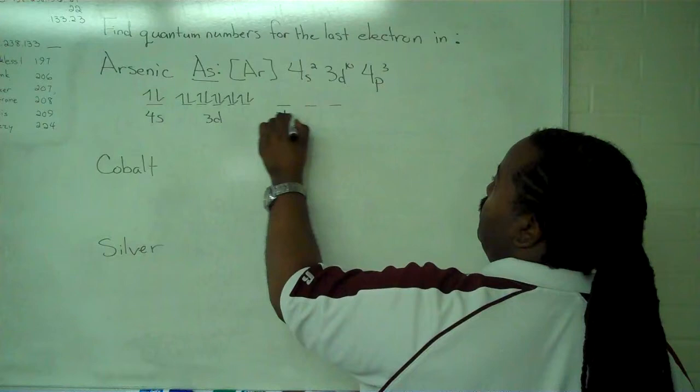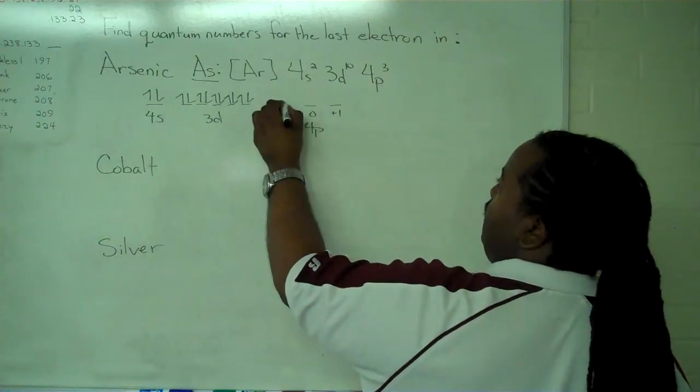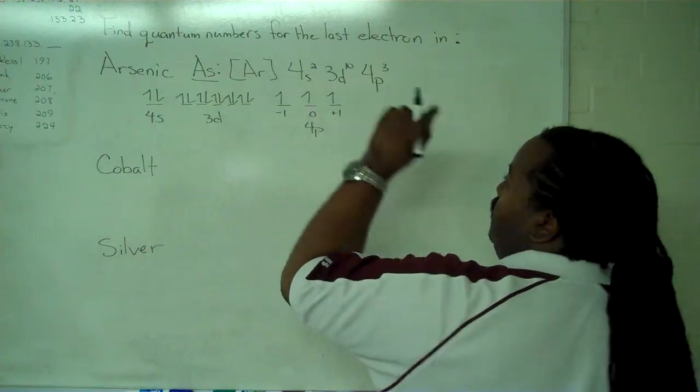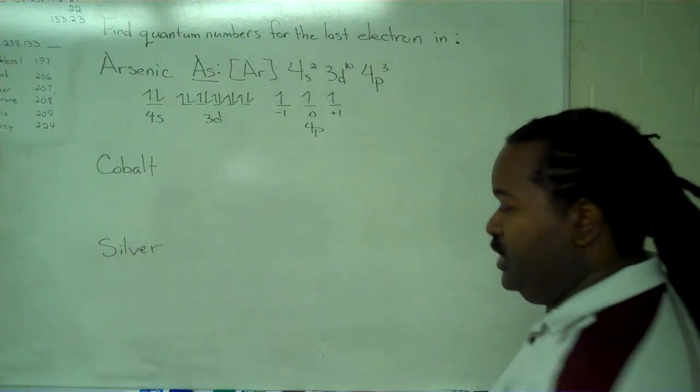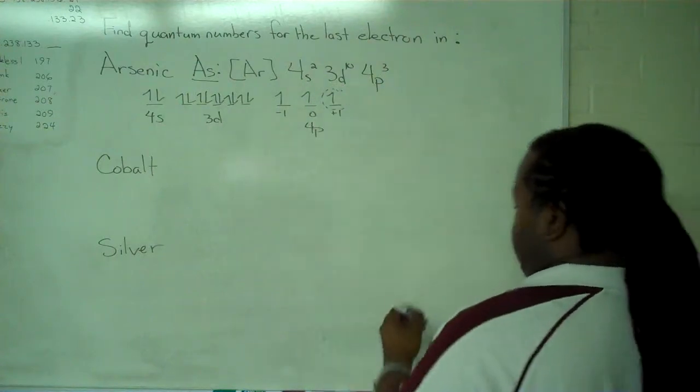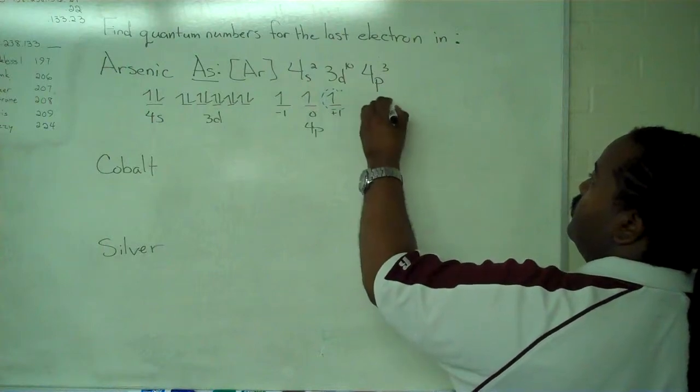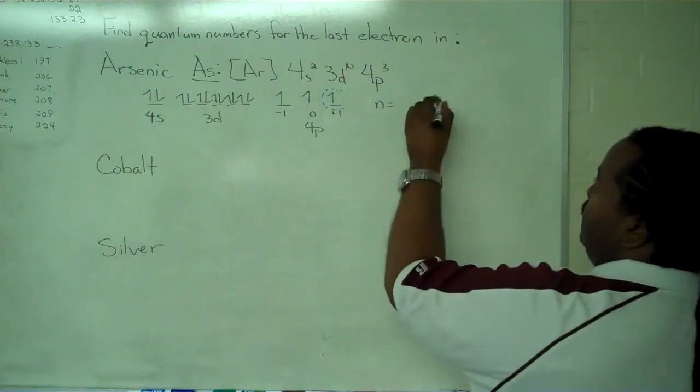So, now we know the identity of the one we're looking at, and we can read off the quantum numbers. n and l, our principal and secondary numbers, will come directly from the orbital type.